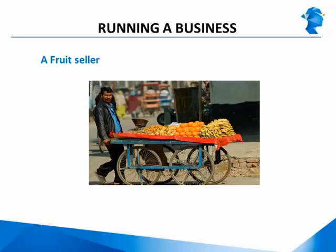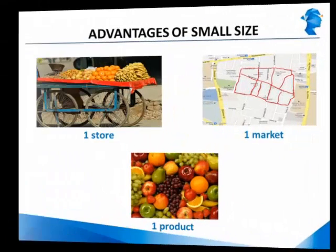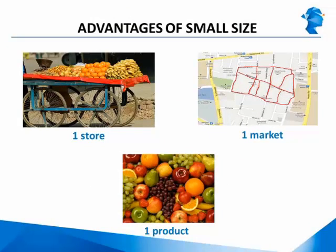While this is a commendable achievement on the fruit seller's part, it is only possible because of the size of the business. The fruit seller has one store — his cart — one market, which is the locality he roams around in, and one product: fruits. This limited scale means he is able to participate in each transaction, observe the behavior of his customers and even his competitors, and pick up the nuances of his customers due to the limited expanse of the market.